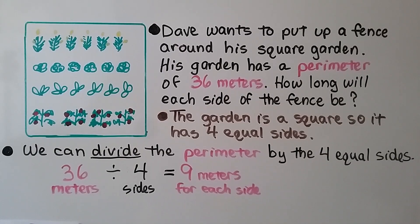Dave wants to put up a fence around his square garden. His garden has a perimeter of 36 meters. How long will each side of the fence be? Well, the garden is square, so it will have four equal sides. We can divide the perimeter by the four equal sides. They told us that it was a perimeter of 36 meters. 36 divided by the 4 sides equals 9 meters for each side. So we know each side is 9 meters.